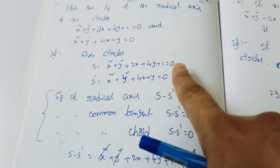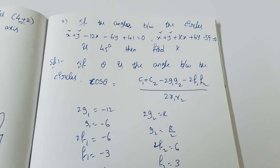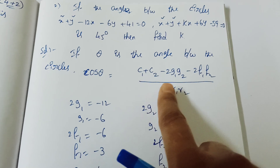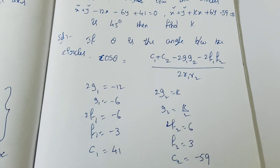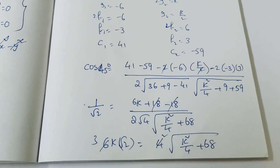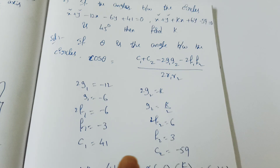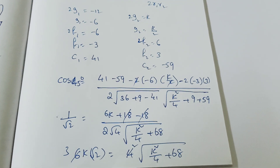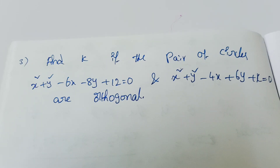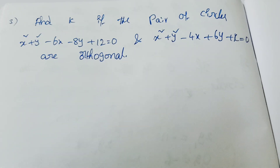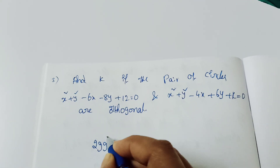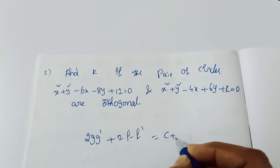So the system of circles has 4 plus 2 marks: radical axis is 2 marks. Next is the orthogonal condition. When the angle between two circles is 90 degrees, they are orthogonal. The orthogonal condition formula is: if two circles are orthogonal, then 2gg' + 2ff' = c + c', where g, f, c are from the first circle and g', f', c' from the second.